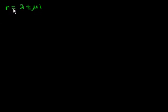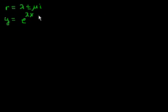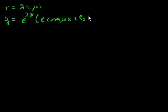Let's do a couple of problems where the roots of the characteristic equation are complex. As a quick review, we learned that if the roots of our characteristic equation are r = lambda ± mu·i, then the general solution is y = e^(lambda·x) times (c1·cos(mu·x) + c2·sin(mu·x)).